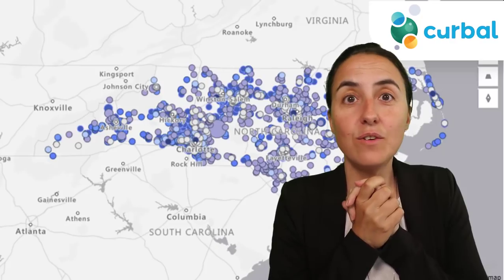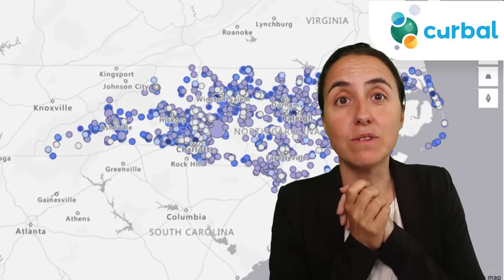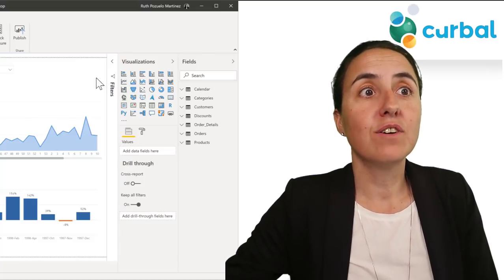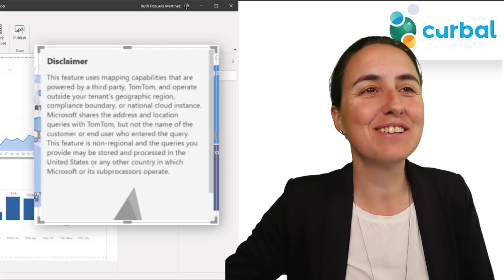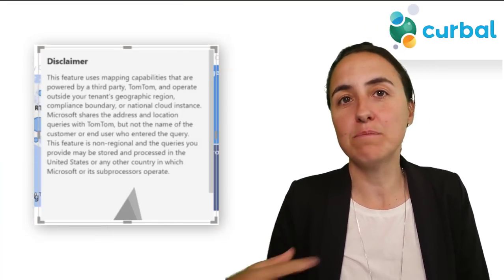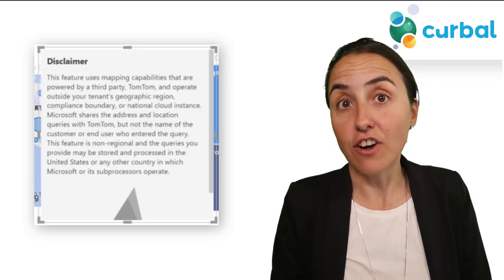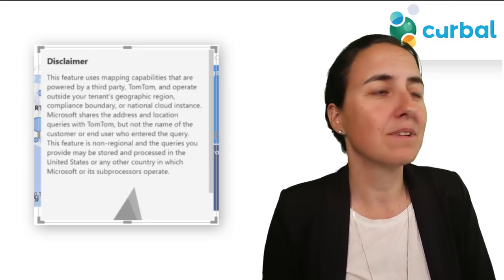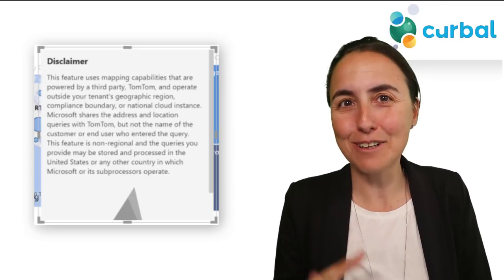There is a new visual: the Azure Map visual. But before you get too excited, when you click on it, it gives you a disclaimer stating that they are using a third-party service — which is TomTom. I wouldn't have expected that collaboration, but it is TomTom.